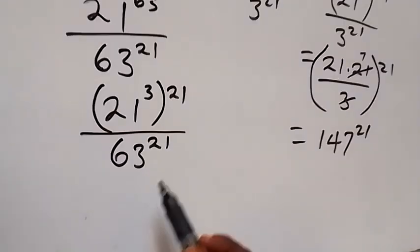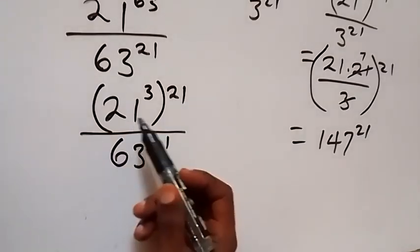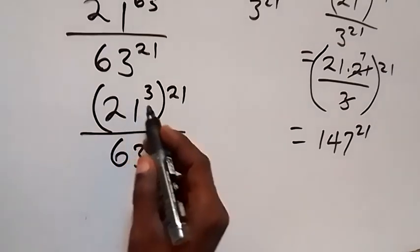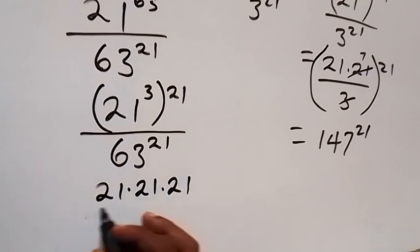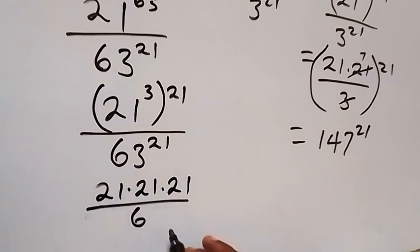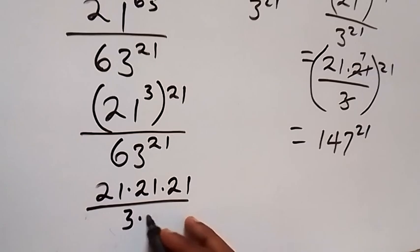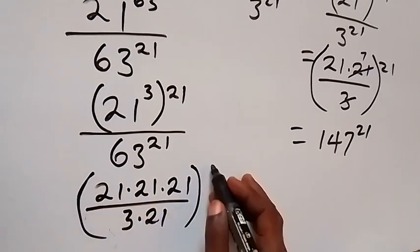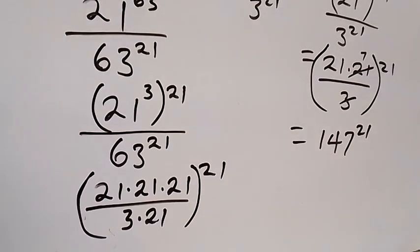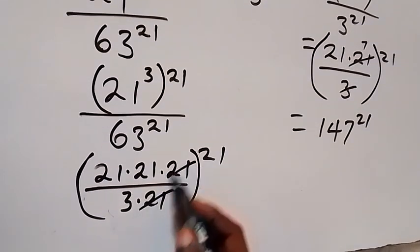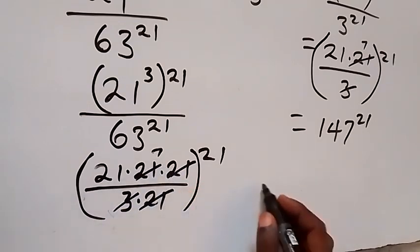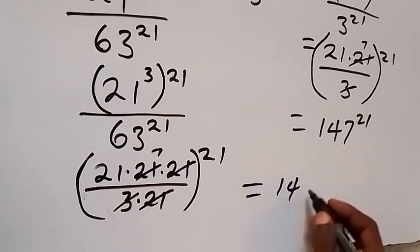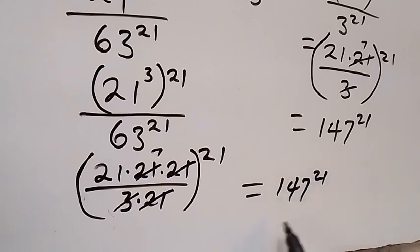Which, when we apply the law of indices — since they have the same power — we can bring this number inside the bracket: 21 raised to power 3 means 21 times 21 times 21, then over 63 inside the bracket. Also, 63 can be written as 3 times 21, all raised to power 21. From here, 21 times 21 times 21 over 3 times 21 — simplifying, 3 goes into 21 giving 7, and 21 times 7 equals 147, raised to power 21. This is another way of solving the problem.